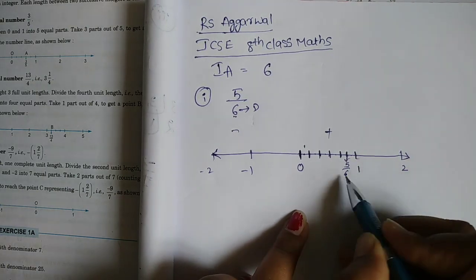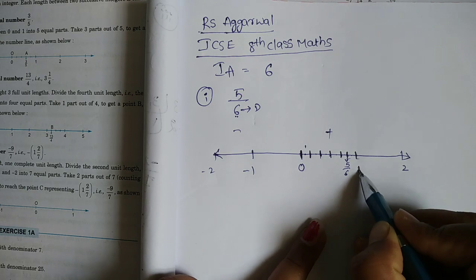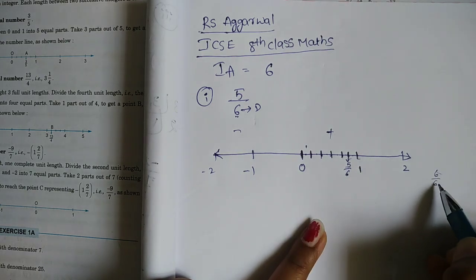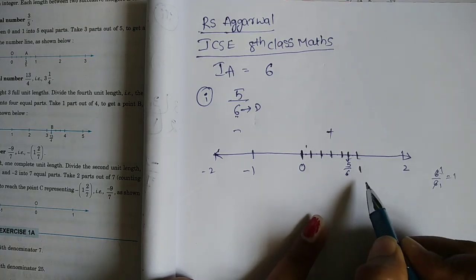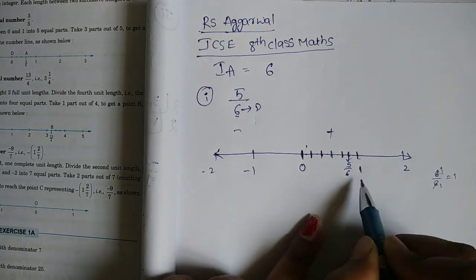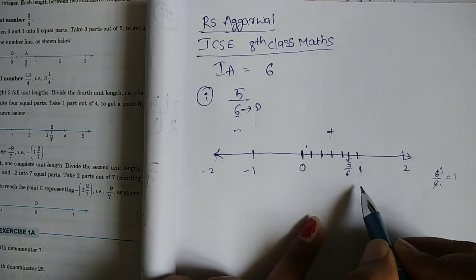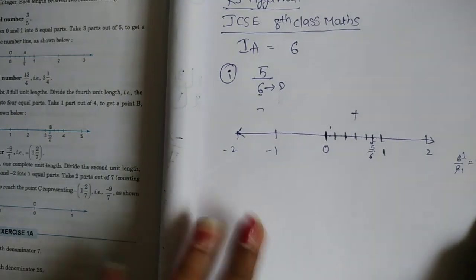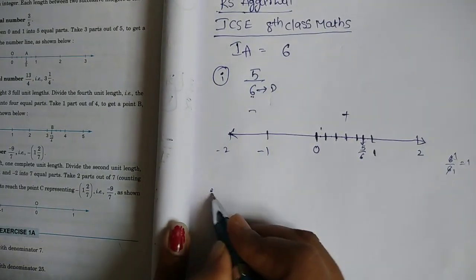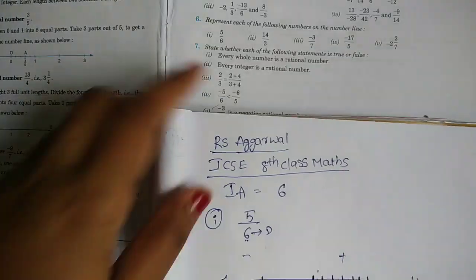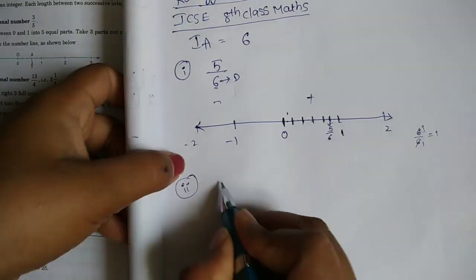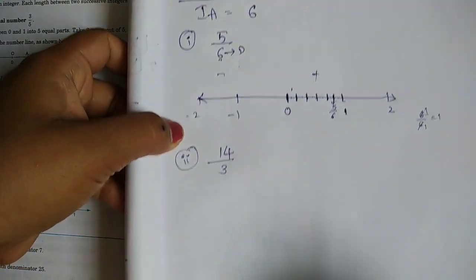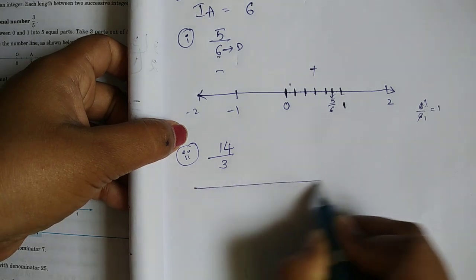Now we need simple logic for the next one. Six by six equals 1. The second question: what number is 14 by 3? 14 by 3 is the same — an improper fraction we will represent on the number line.